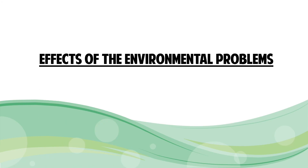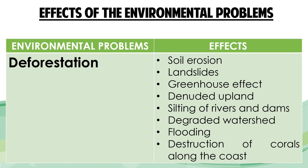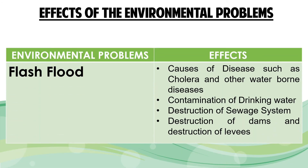Let's go now to the effects of the environmental problems mentioned earlier. The effects of deforestation are soil erosion, landslides, greenhouse effect, denuded upland, silting of rivers and dams, degraded watershed, flooding, and destruction of corals along the coast. The effects of flash flood include causes of disease such as cholera and other waterborne diseases, contamination of drinking water, destruction of sewage systems, destruction of dams and levees, and destruction of houses.